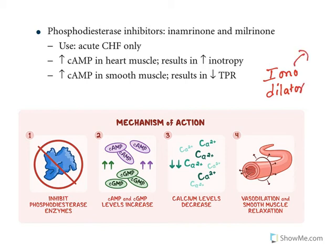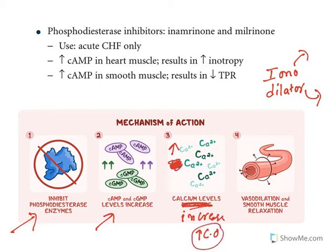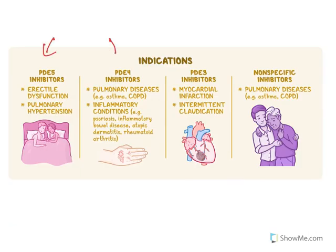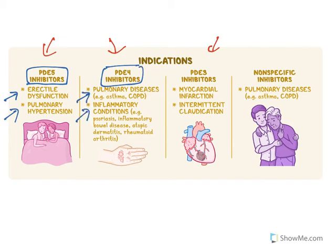Inodilators inhibit phosphodiesterase, increase cyclic AMP, increase calcium levels in the heart — resulting in increased cardiac output — and cause vasodilation in blood vessels. There are several phosphodiesterase subfamilies: PDE-5 is specifically used to treat erectile dysfunction and pulmonary hypertension; PDE-4 is used to treat pulmonary diseases and inflammatory conditions; PDE-3 is specific to cardiac tissue and is used to treat myocardial conditions and intermittent claudication; non-specific PDE inhibitors are used to treat pulmonary and lung diseases.